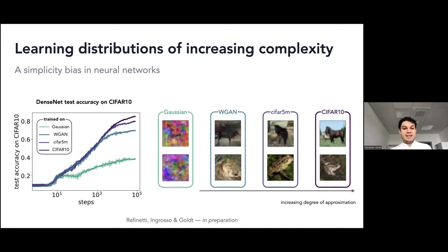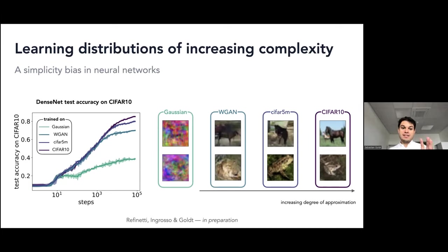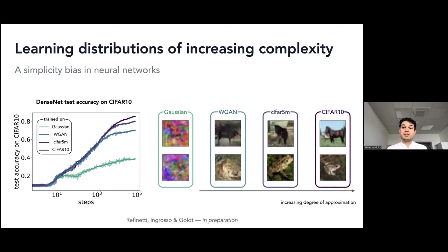What I find striking is that these different curves — trained on Gaussian clone, Wasserstein GAN, diffusion model, real CIFAR-10 — collapse on top of each other for their respective early periods. It really looks like the network is learning distributions of increasing statistical complexity: it figures out there are 10 classes, and then the course of training can be understood as building increasingly accurate statistical models of each class. This fits nicely with discussions of the so-called simplicity bias of neural networks — the idea that neural networks learn simple functions first.